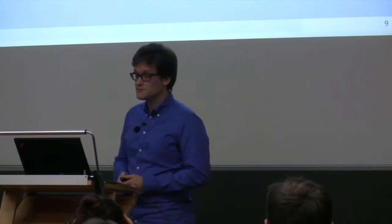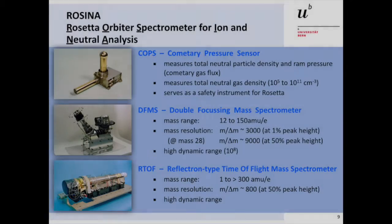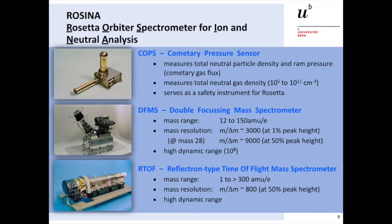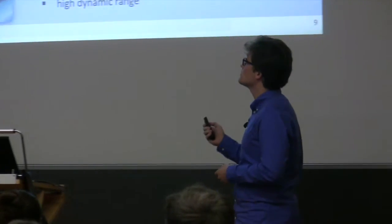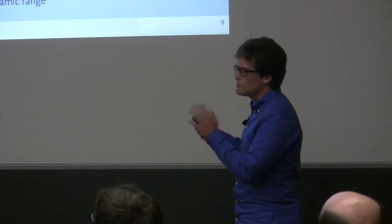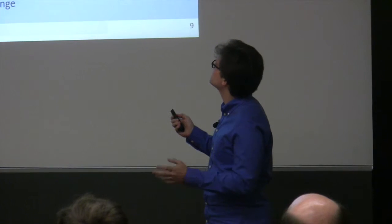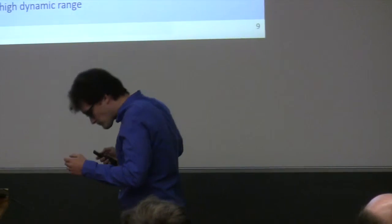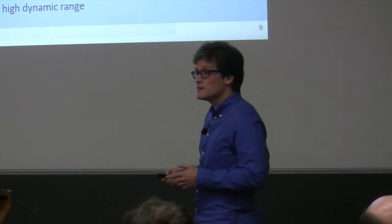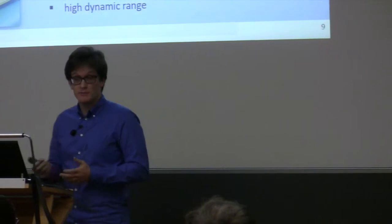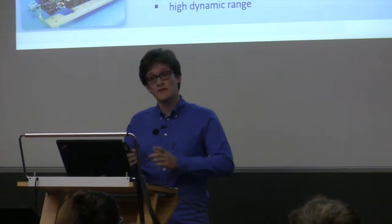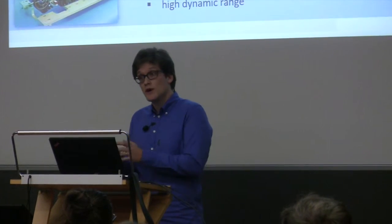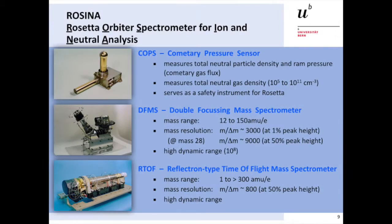Among these instruments, one of them, one I'm working on, ROSINA, which stands for Rosetta Orbiter Spectrometer for Ion and Neutral Analysis, consists of three sensors. One, pressure sensor, COPS, and two, mass spectrometers. I will talk shortly about each of them. COPS, the pressure sensor, basically measures the neutral gas density. That's just the activity of the comet. It serves as a safety instrument aboard ROSETTA, so that means it's a really important instrument, because it informs in real time the other instruments about the surrounding pressure, allowing these instruments to switch themselves off in case this pressure will be too high. So, in Bern, we have the power to switch all the other instruments off. It's pretty cool.